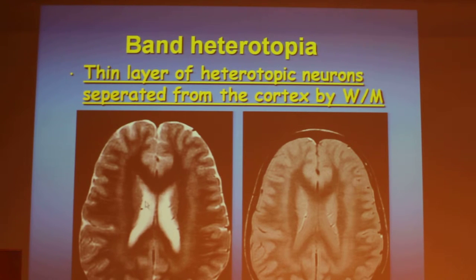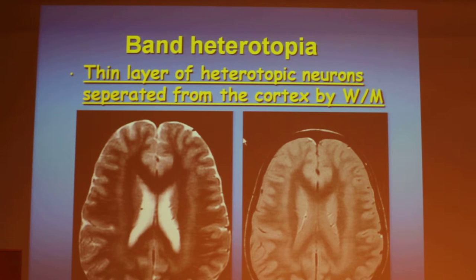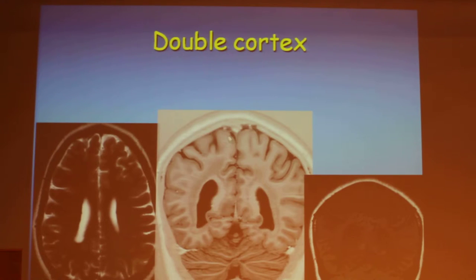So we have alternating gray matter, white matter, gray matter, white matter, and again the cortex — gray matter. So all this band of heterotopic gray matter is the band heterotopia. It is also called the double cortex sign.